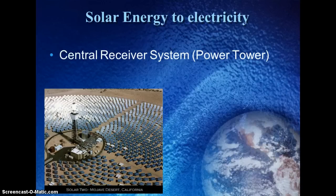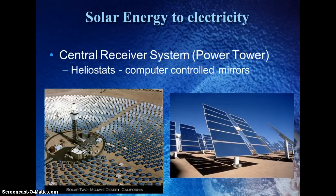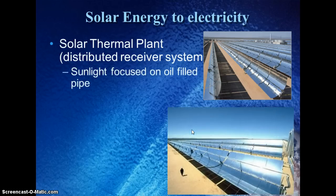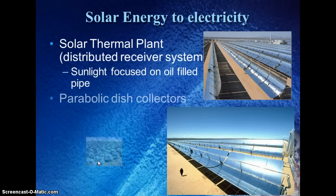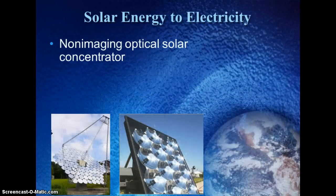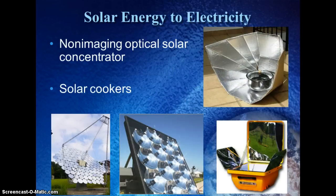These are examples of how solar energy can power more than just one building. A central receiver system, or power tower, directs sunlight from mirrors toward a central tower. A solar thermal plant uses curved mirrors to direct sunlight toward a pipe filled with oil running through the middle. Parabolic dish collectors are also curved mirrors directing sunlight to a central receiver on each dish. A solar cooker is one way to use passive solar heating to heat food — we'll do a project with this after exams.